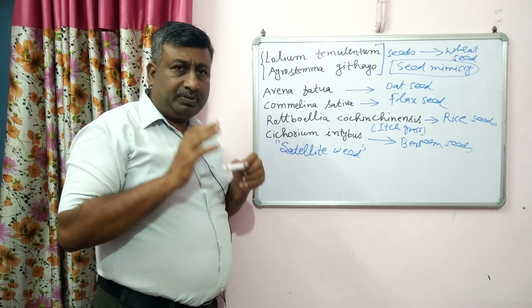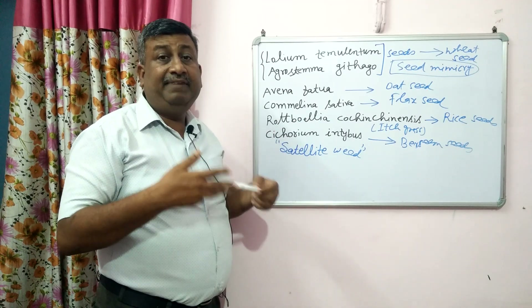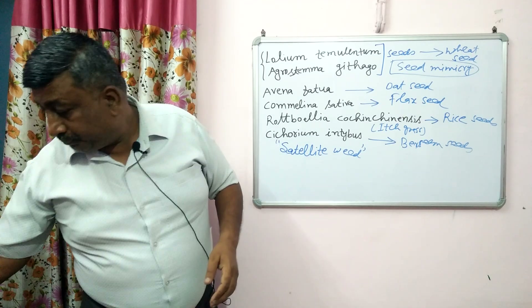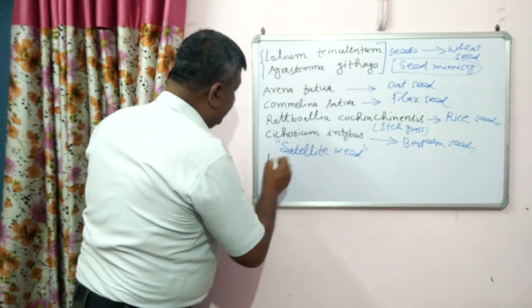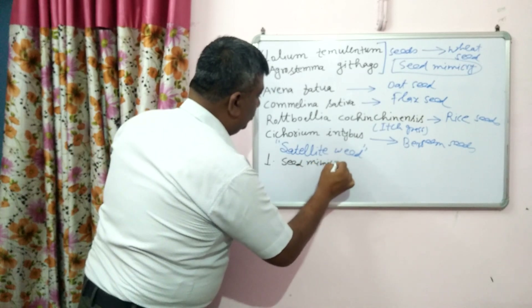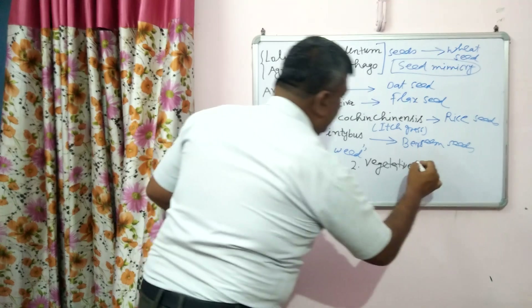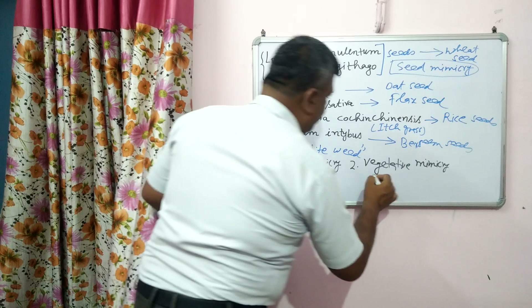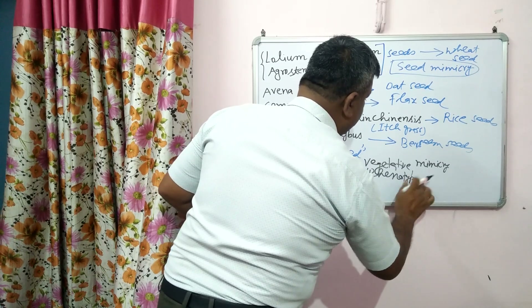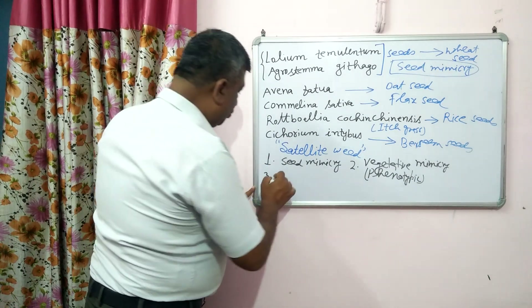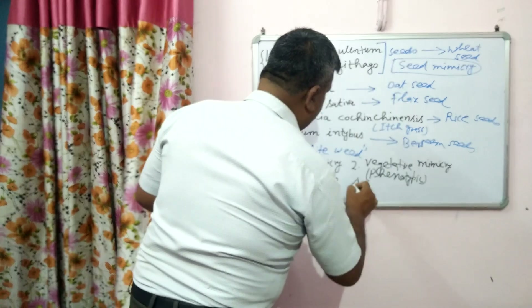Mimicry means some weeds pretend to be like a crop. This behavior or likeness may be with respect to seed, leaf, shoot, etc. On the basis of this, there are four types of mimicry: number one is seed mimicry; number two is vegetative mimicry, also called phenotypic mimicry, where the phenotype or morphology is the same; number three is chronological mimicry; and number four is biochemical mimicry.